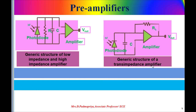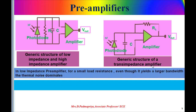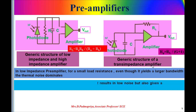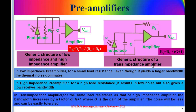Next we shall see what are the preamplifiers or front end amplifiers. There are three different types: low impedance amplifier, high impedance amplifier, and trans-impedance amplifiers. Noise sources at the front end of a receiver normally dominate the sensitivity and the bandwidth, so the front end amplifiers are used to increase the sensitivity of the receivers.